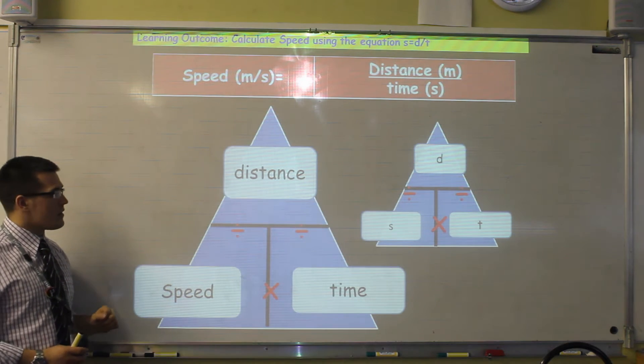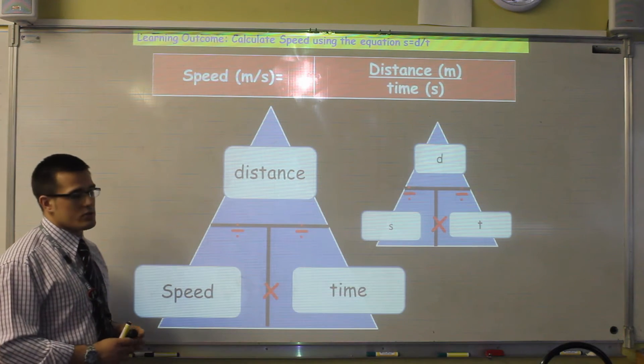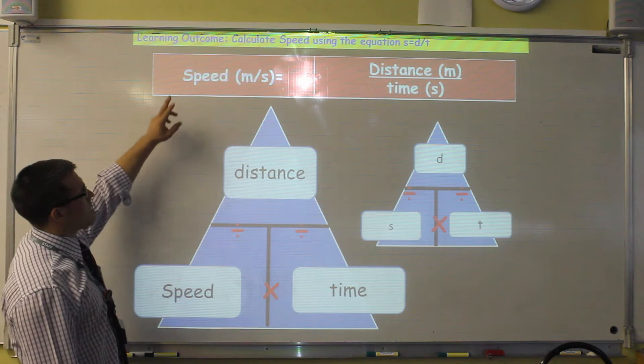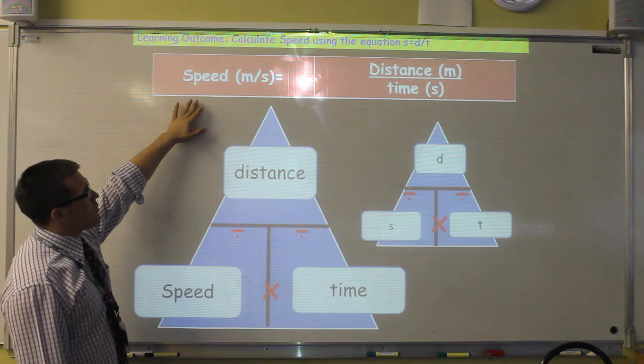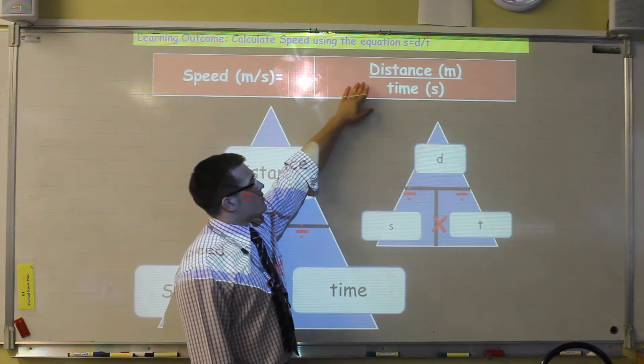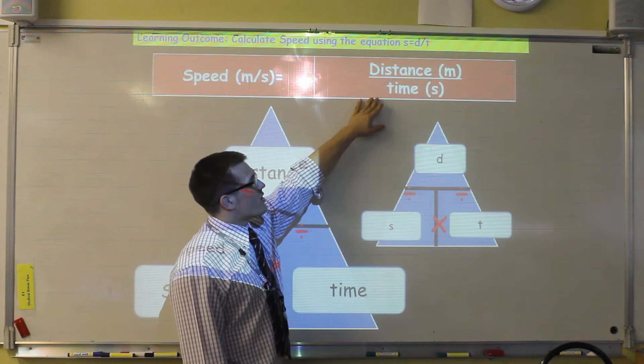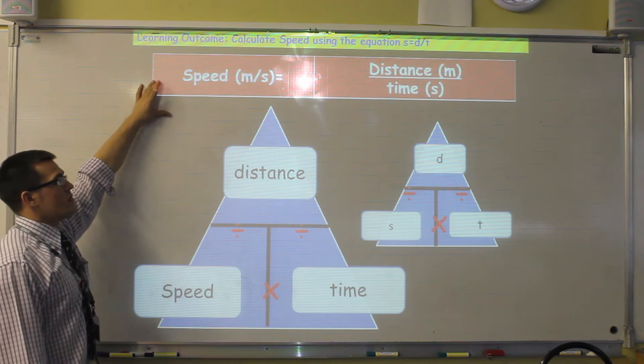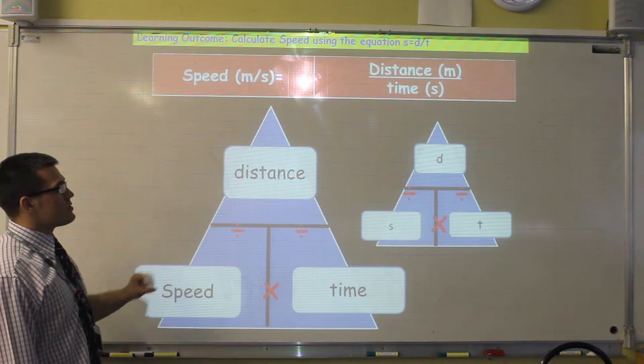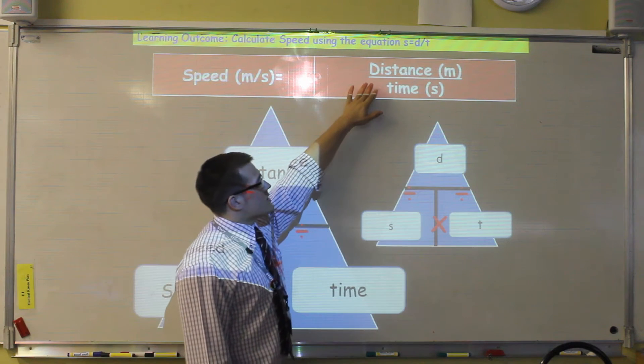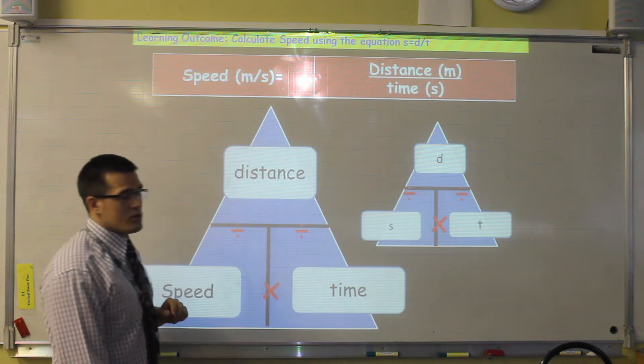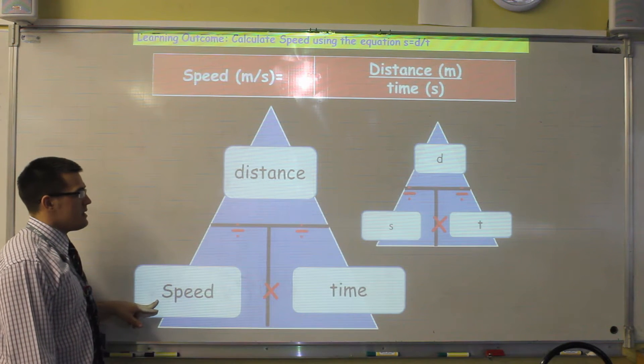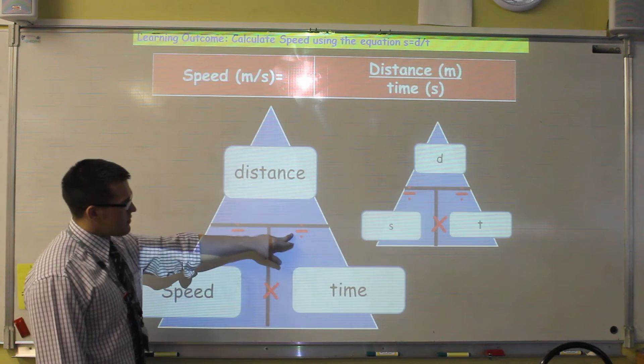And we can represent that equation with these two triangles. Now these triangles you need to be familiar with. If we look carefully at how we are given this equation, we can see that we've got one quantity divided by another. So distance divided by time. The way we convert that into a triangle, is we always put the quantity on top of the division, on top of our triangle.